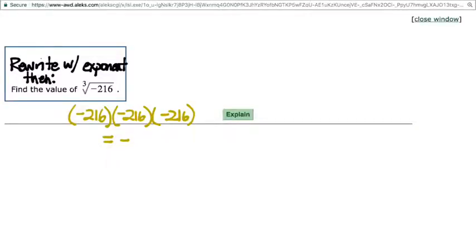First of all, we have to read it as a root because of this root symbol that's sitting out here, right? So, it's a root, which means it's not the power of 216, but it's the opposite of a power. Negative 216. And you called it the cube root. Why?